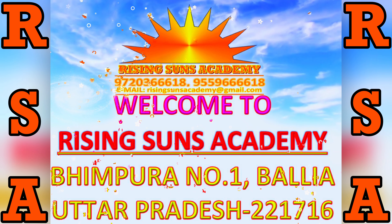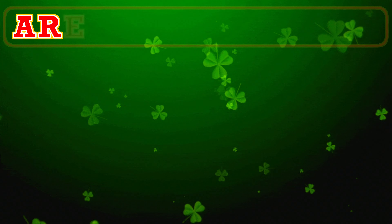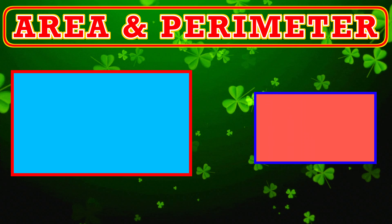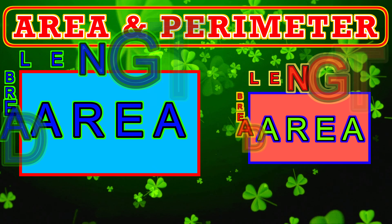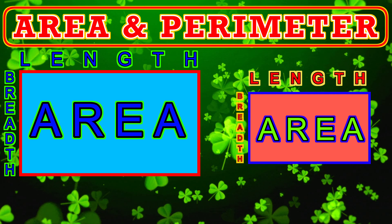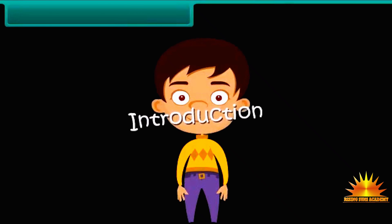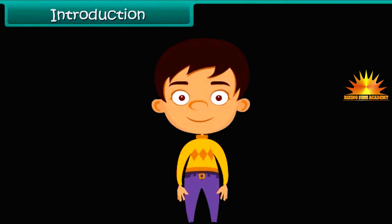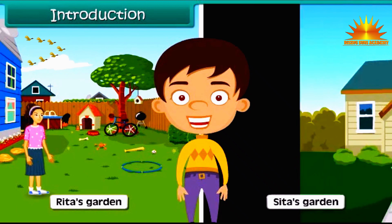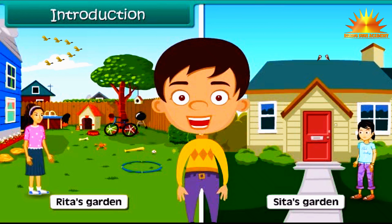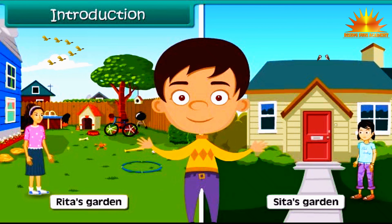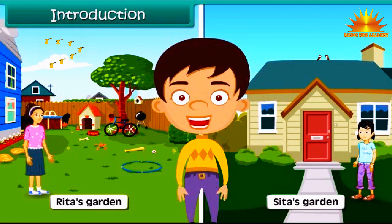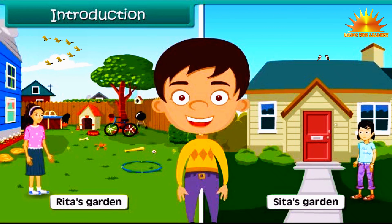Welcome to Rising Suns Academy. Rita's garden is bigger than Sita's garden. Have you ever wondered what the basis of this comparison? The comparison is based on the area of a garden, that is, the amount of space of the garden. In this lesson, we will learn about area in detail.